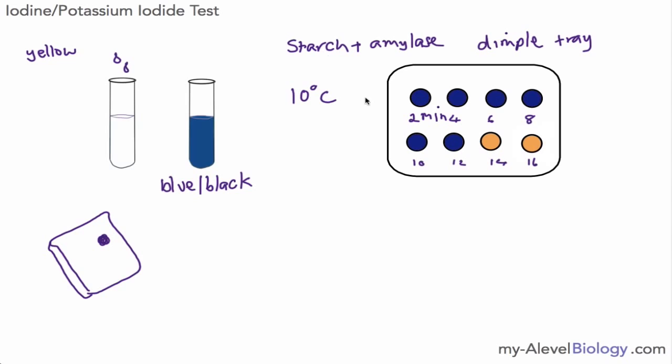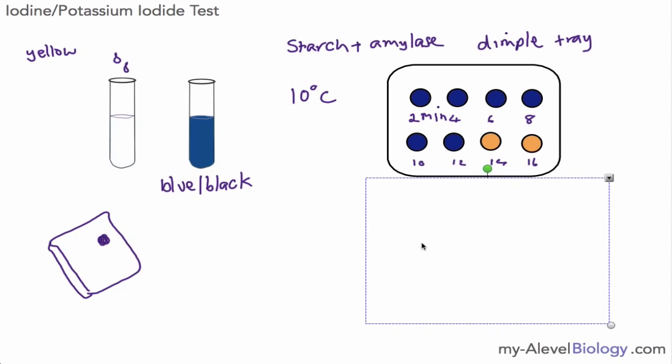So we could then repeat the experiment, this time at say 30 degrees. Again, we've taken the test solution out at these various times, and we can see the effect of the temperature on our starch and amylase solution. And you can see that the starch has disappeared much more quickly this time because we've got a warmer temperature for our enzymes to work in.